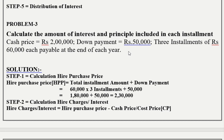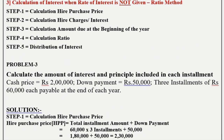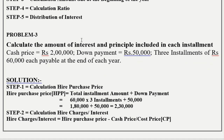You have to follow these 5 steps: Step 1 — calculate hire purchase price. Step 2 — calculate hire charges. Step 3 — calculate amount due at the beginning of the year. Step 4 — calculate ratios. Step 5 — distribution of interest. Let us begin. Step 1: Calculation of hire purchase price.